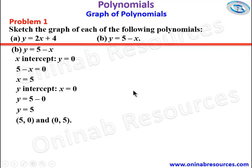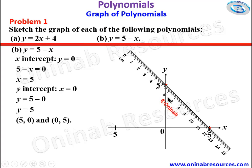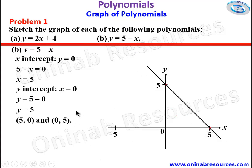We go ahead to sketch the graph. We have our y-axis and x-axis with the origin. We mark 5 on the x-axis and 5 on the y-axis. When x is 5, y is 0 — that's our first point. When x is 0, y is 5 — that's our second point. We place a ruler, join the two points, and we are done sketching the graph of y equal to 5 minus x. That is the end of problem 1.